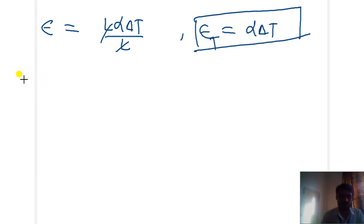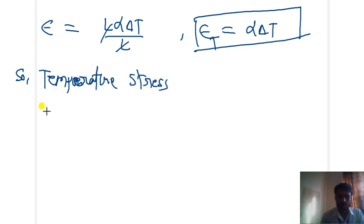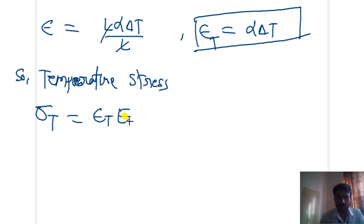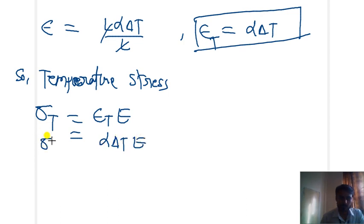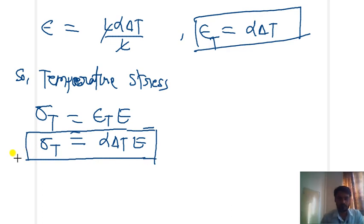If we get the strain, we can calculate the stress very easily. Temperature stress sigma T equals strain into modulus of elasticity. We have the value of strain as alpha × delta T, and modulus of elasticity is E, so the thermal stress equals alpha × delta T × E. If we have restricted the change of any element due to variation of temperature, at that condition we will get the value of temperature stress equal to alpha × delta T × E.